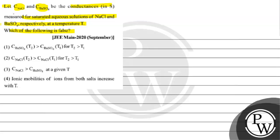Option 2: conductance of NaCl at T2 is greater than conductance of NaCl at T1 for T2 greater than T1.